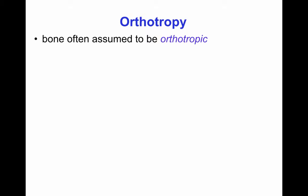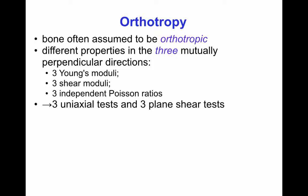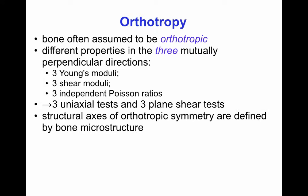One example of an anisotropic material is an orthotropic material. Bone is often assumed to be orthotropic. In orthotropic materials there are different properties in three mutually perpendicular directions, meaning there are three Young's moduli along three mutually perpendicular axes, three shear moduli in three mutually perpendicular planes, and three independent Poisson ratios. Three uniaxial tension tests together with three plane shear tests would be enough to determine all nine coefficients of an orthotropic elastic solid.